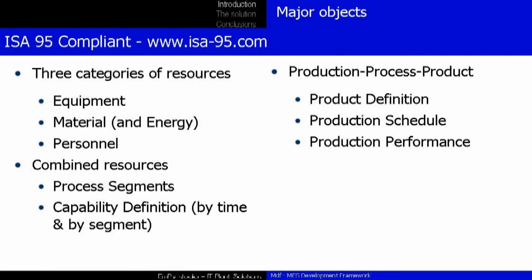Now let us take a look at the ISA-95 standard. The ISA-95 standard is an international standard for the integration between enterprise and control systems. ISA-95 consists of models and terminology. These can be used to determine which information has to be exchanged among systems for sales, finance, and logistics, and systems for production, maintenance, and quality. This information is organized in UML models, which are the basis for the development of standard interfaces between ERP and MES systems.